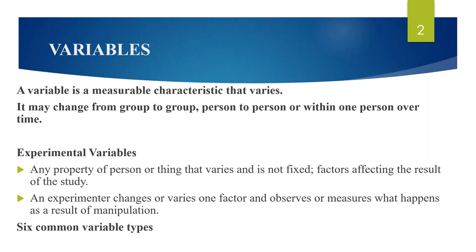In scientific research, scientists and researchers utilize a variety of methods and variables when conducting their experiments. In simple terms, a variable represents a measurable attribute that changes or varies across the experiment, whether comparing results between multiple groups, multiple people, or when using a single person in an experiment conducted over time. What an experimenter does is change or vary one factor and observe or measure what happens as a result of that manipulation.